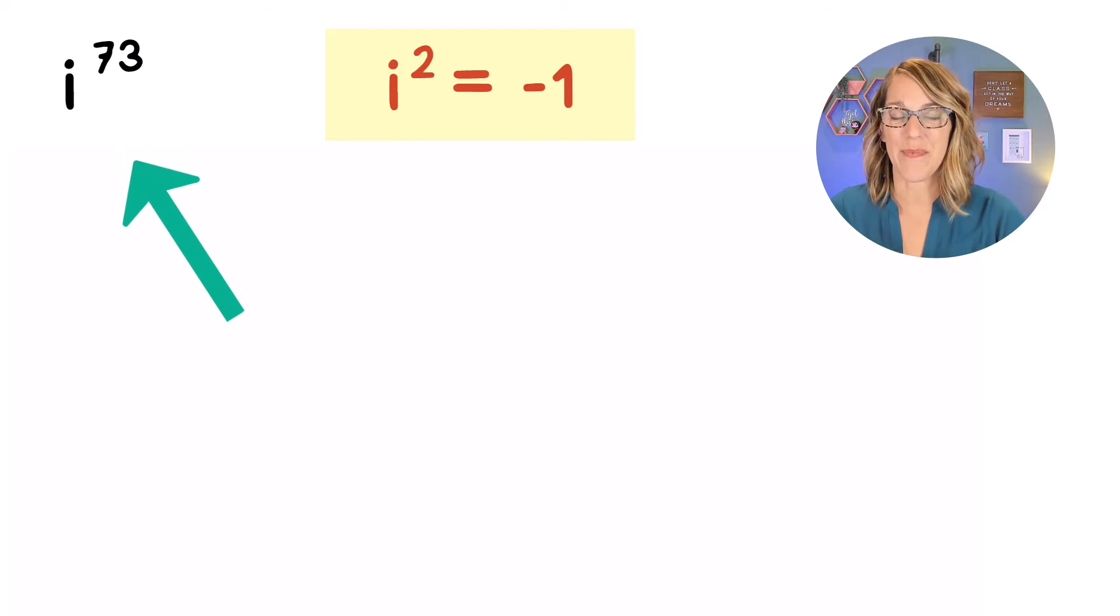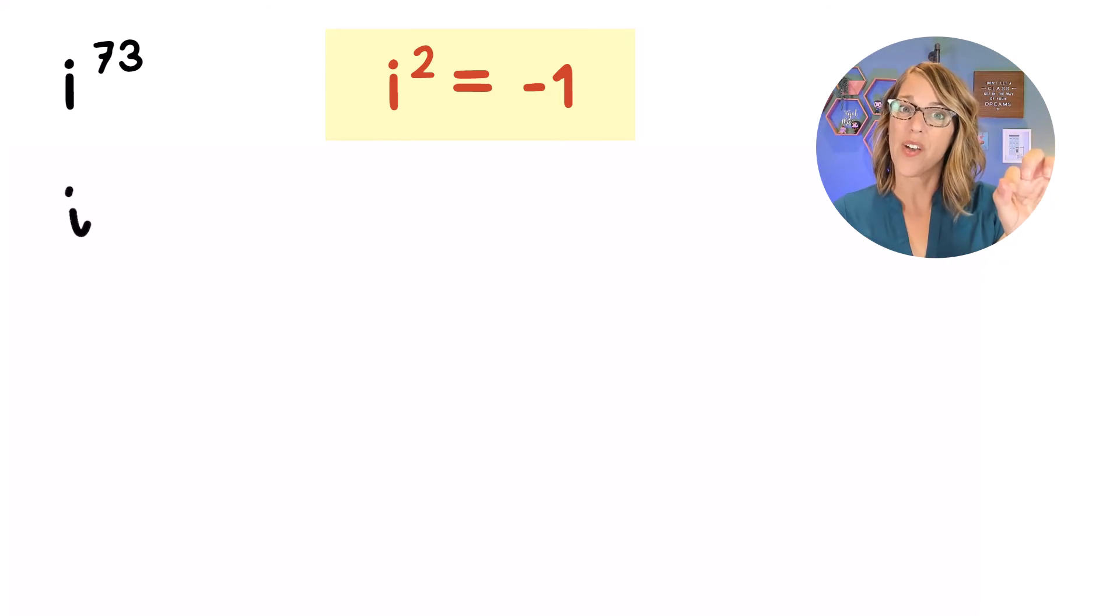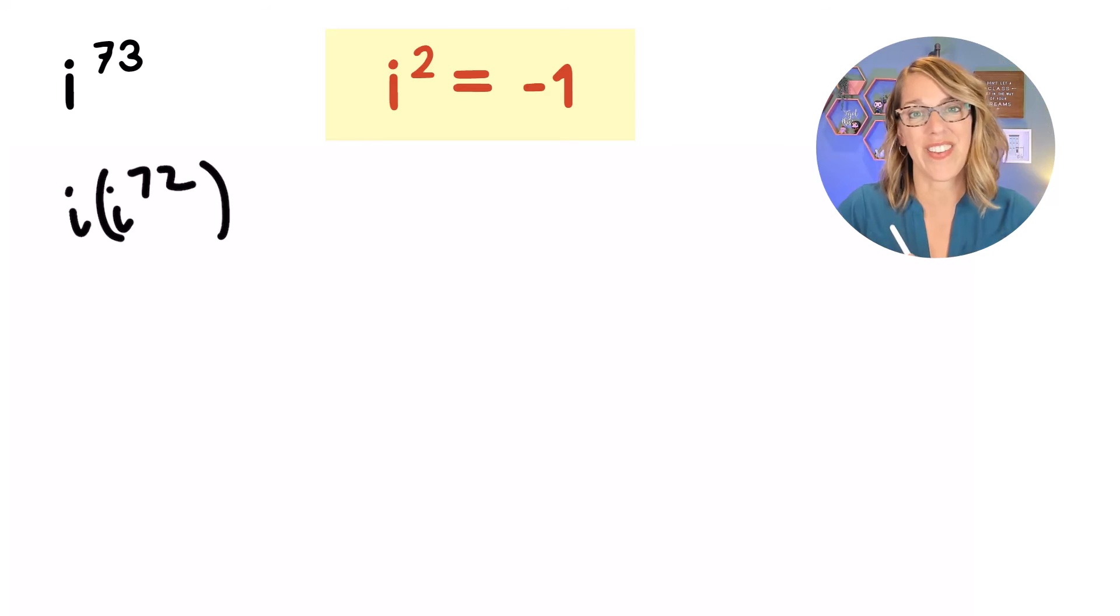Now this is an odd power, so I do want to separate one of my i's out. If I take one i away, that's going to leave me with 72 i's left. So I still have 73 there altogether.